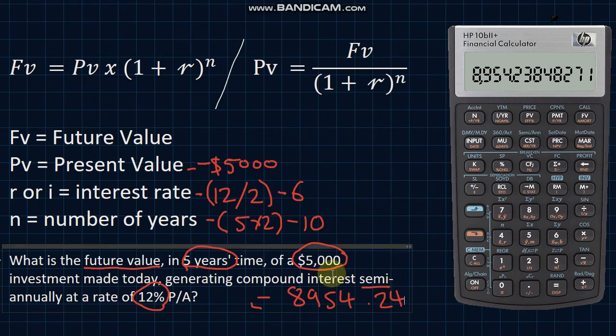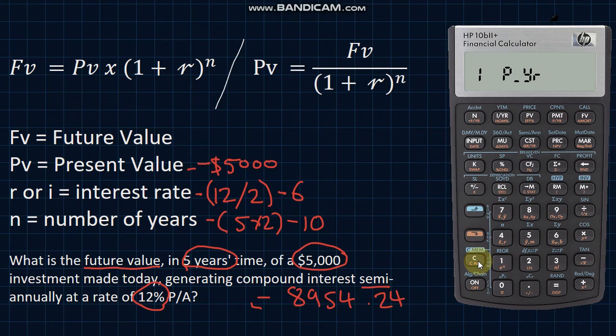So that is our future value of $5,000 in 5 years' time, compounding semi-annually at 12%. Now we can go back and check that this is the correct number, do a bit of a backtest for solving for the present value, using the same values, however, inputting the future value and solving for the present value.